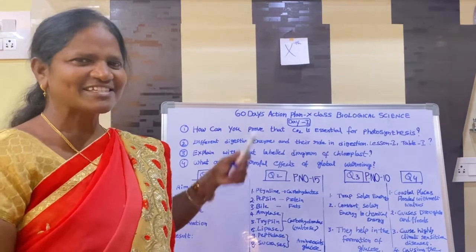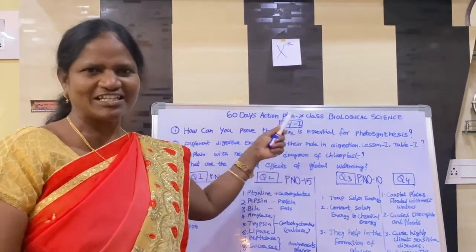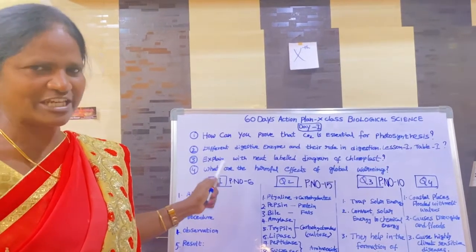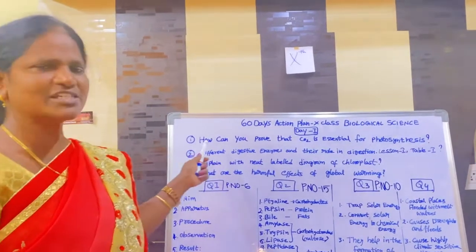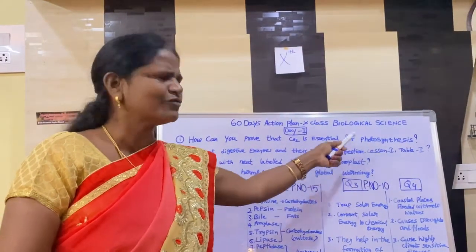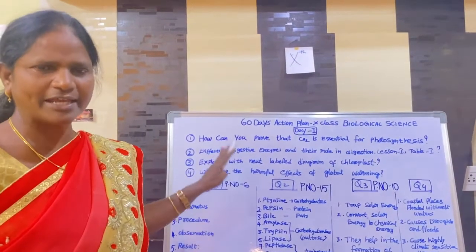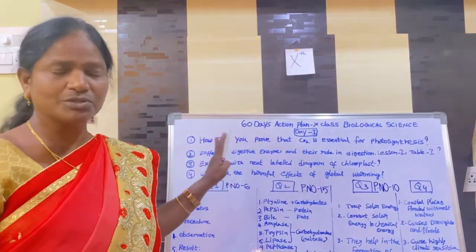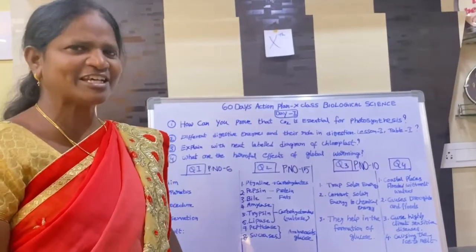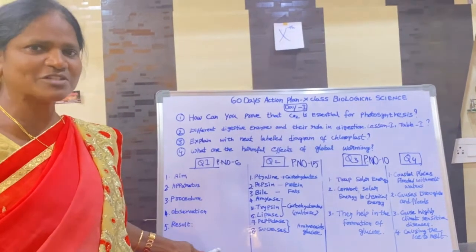Students, this is the 60 days action plan, day 1. Here, 4 questions are given to you for the first day. The first question is: how can you prove that CO2 is essential for photosynthesis? If you read all 4 questions daily, you can surely get good marks. For writing the answer, you must follow 5 steps and subheadings: aim, apparatus, procedure, observation, and result.